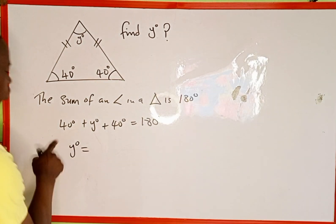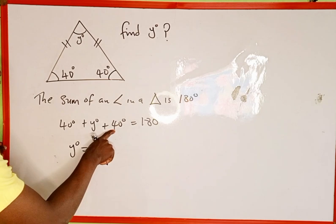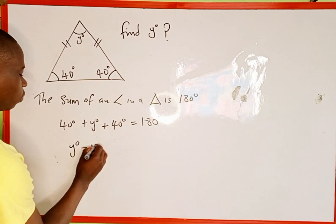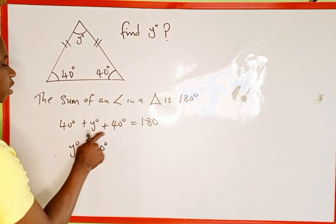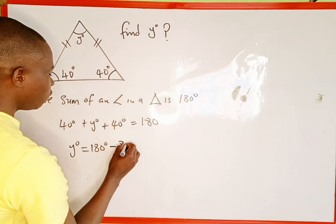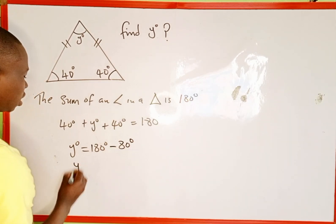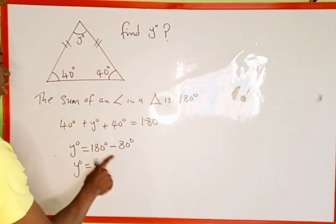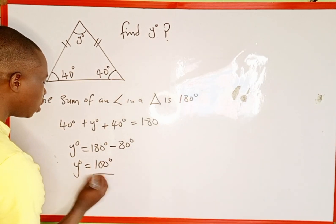So y degrees will now be equal to, 40 degrees plus 40 degrees is 80 degrees. Then we have 180 degrees here. When we take that 80 degrees to the right hand side, it's going to turn to negative 80 degrees. So y degrees now equals 180 degrees minus 80 degrees which is going to give us 100 degrees.